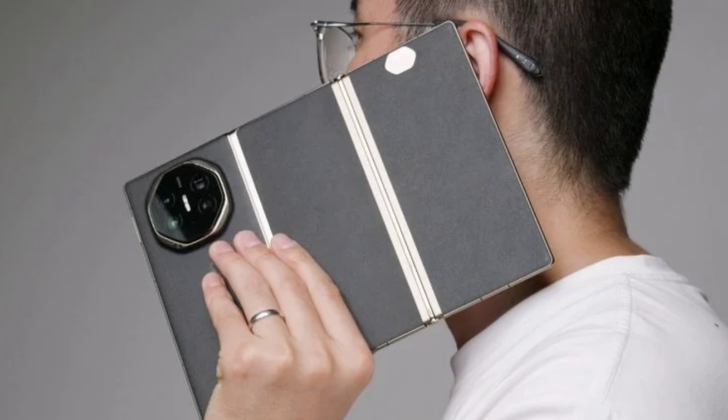Do you guys know the Zenbook 17 Fold? That's a foldable laptop from Asus. Can the Mate XT be folded up like it and use the bottom half as a keyboard? The lower half does work as a keyboard, but due to the center of gravity and camera bulge, it doesn't get laid out on a table. So the keyboard is something you'll have to get for yourself.